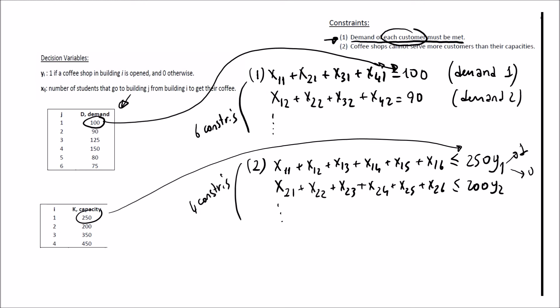The decision variable constraints are: xij greater than or equal to 0 for all i, j, and yi is binary for all i values. My constraint set is ready, decision variables are defined, and the objective function is formulated — my model is complete.